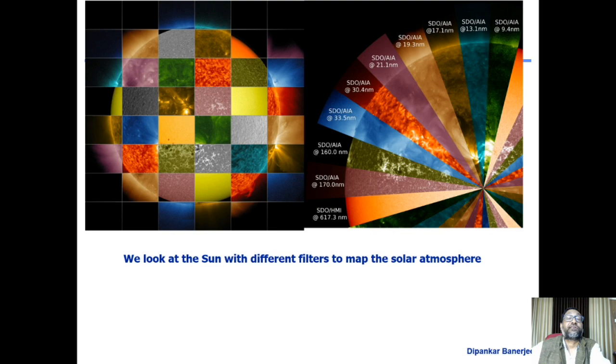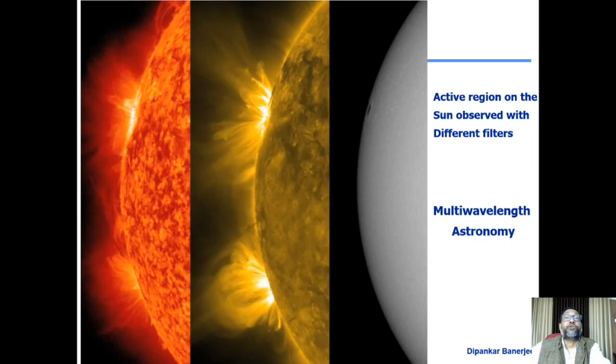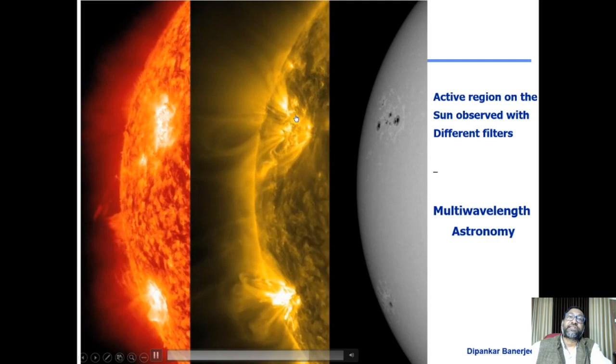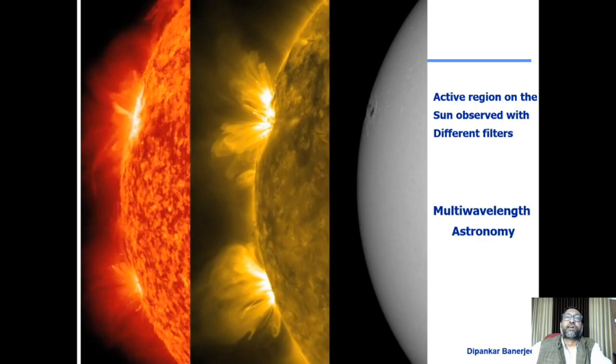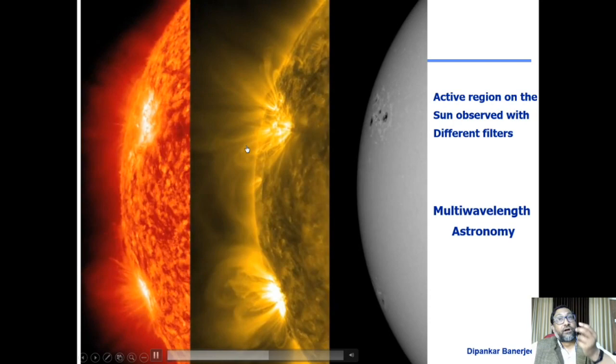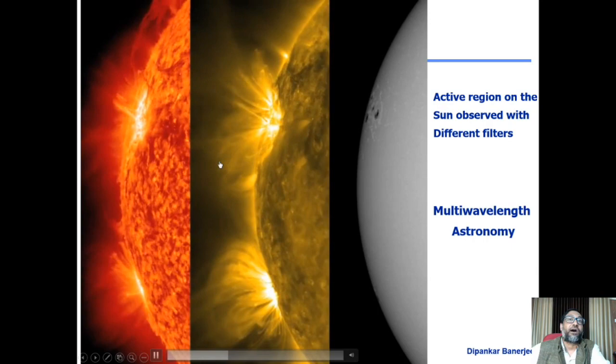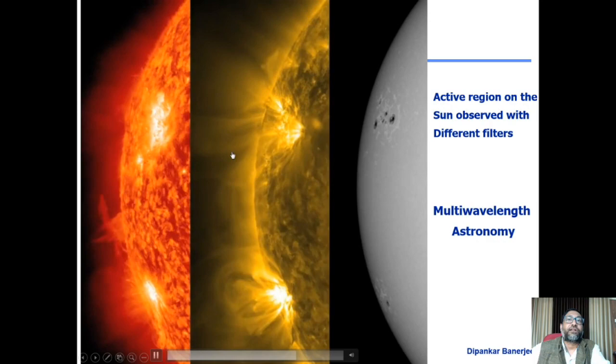If there is any dynamics happening, we will know pretty well. This movie made from SDO shows active regions — regions with strong magnetic fields. These two magnetic regions are connected by theoretically constructed flux tubes, and in observations they appear as loop structures where plasma of high temperature and density is confined. This is what we call the active region, and this is the era of multi-wavelength astronomy.